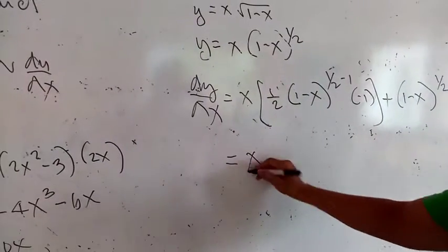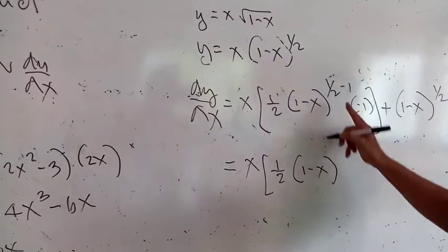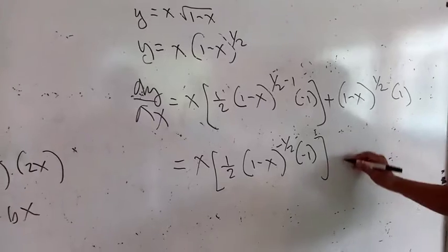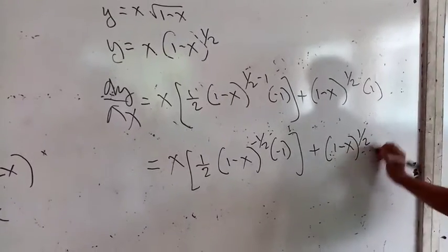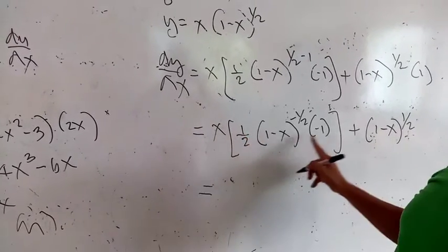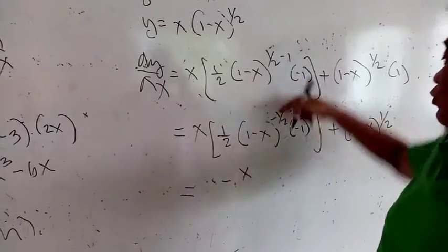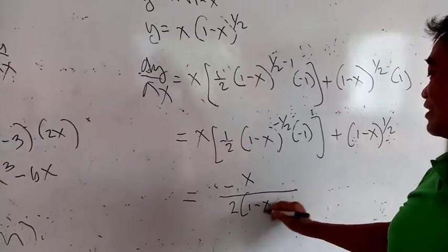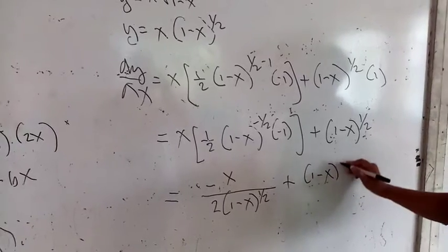Then plus the second, 1 minus x to the 1 half, multiplied by the derivative of the first, which is 1. In algebra: x multiplied by 1 half times 1 minus x. If you subtract the exponent, that will be negative 1 half, multiplied by negative 1 times — when you multiply — that will be plus x, times 1 minus x to the positive 1 half.